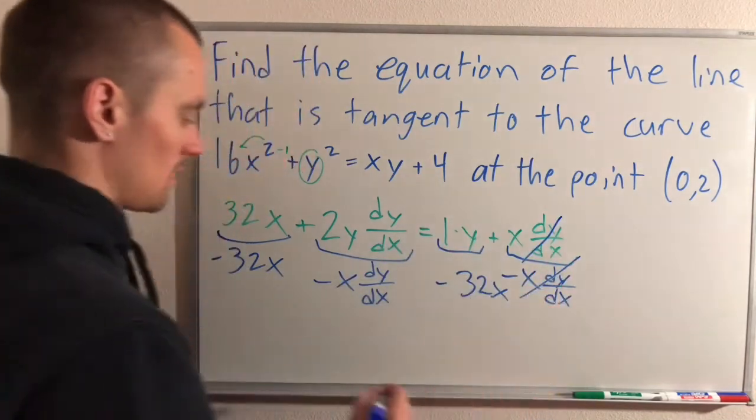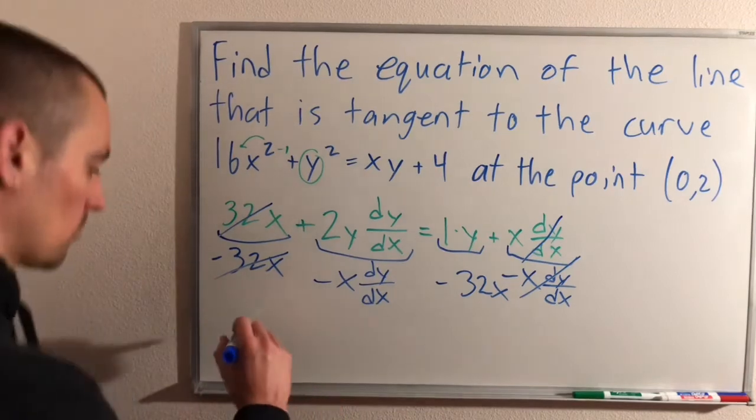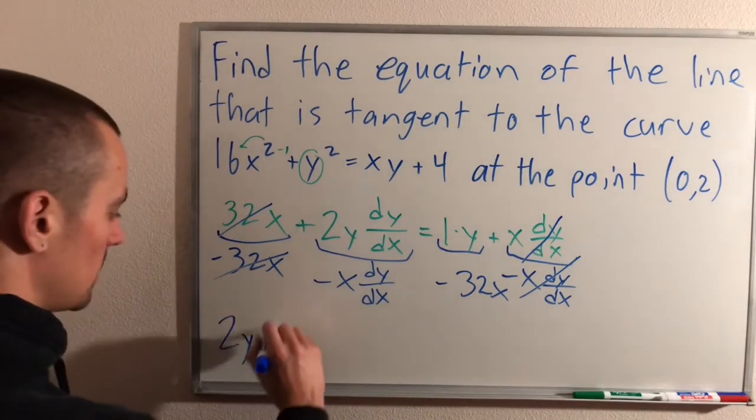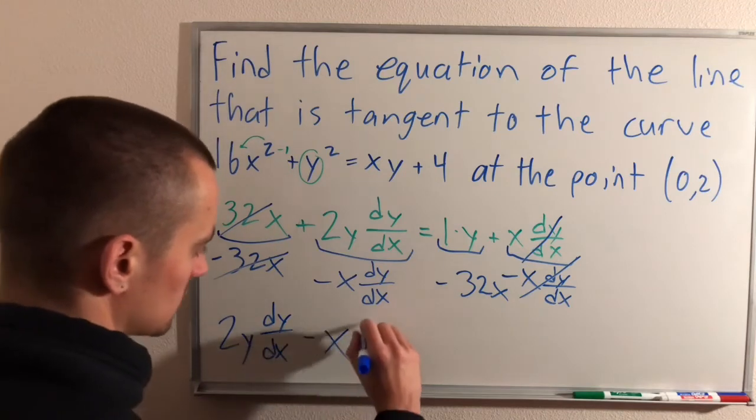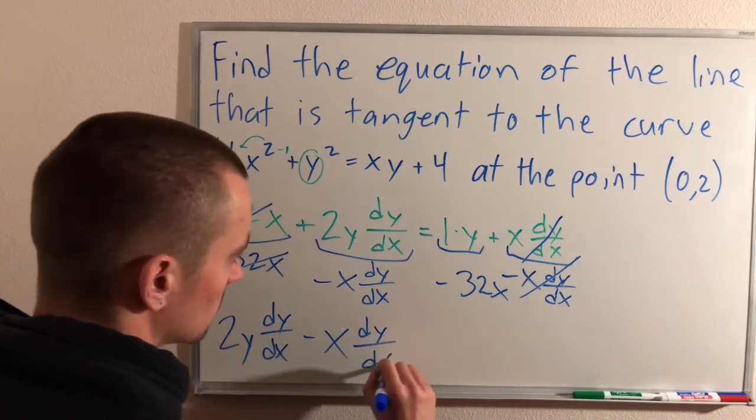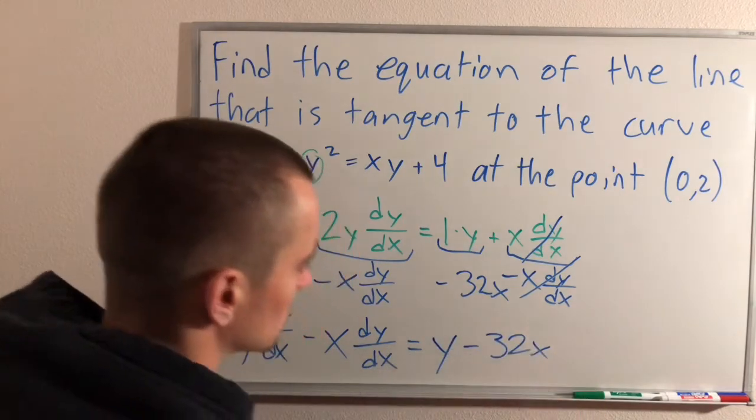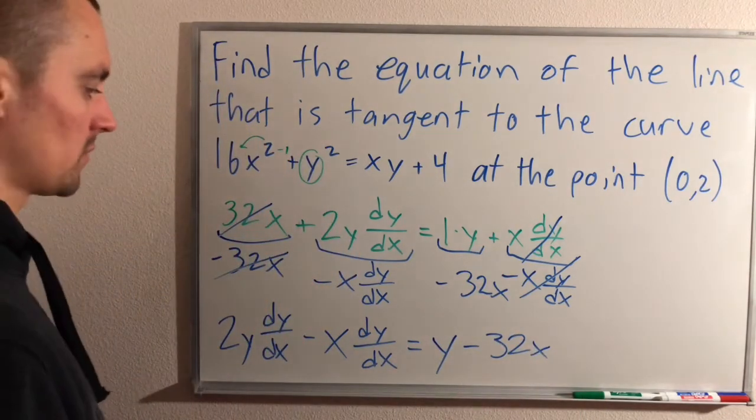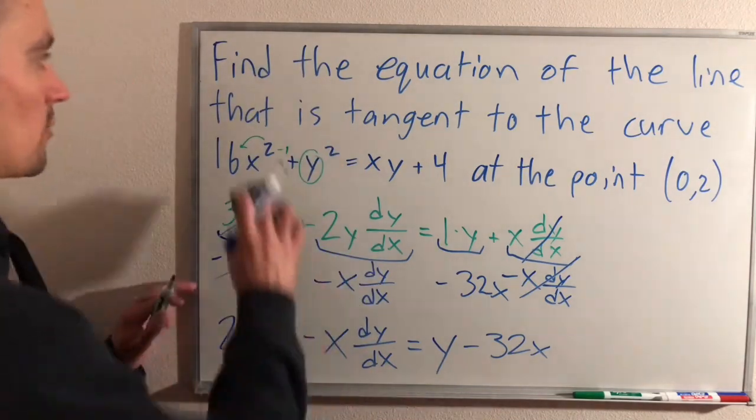This is going to cancel with that. This is going to cancel with that. So over on the left side, we're going to have 2y dy/dx minus x dy/dx equals y minus 32x, right? Okay, so now I'll just erase up here and move this up to the top real quick.